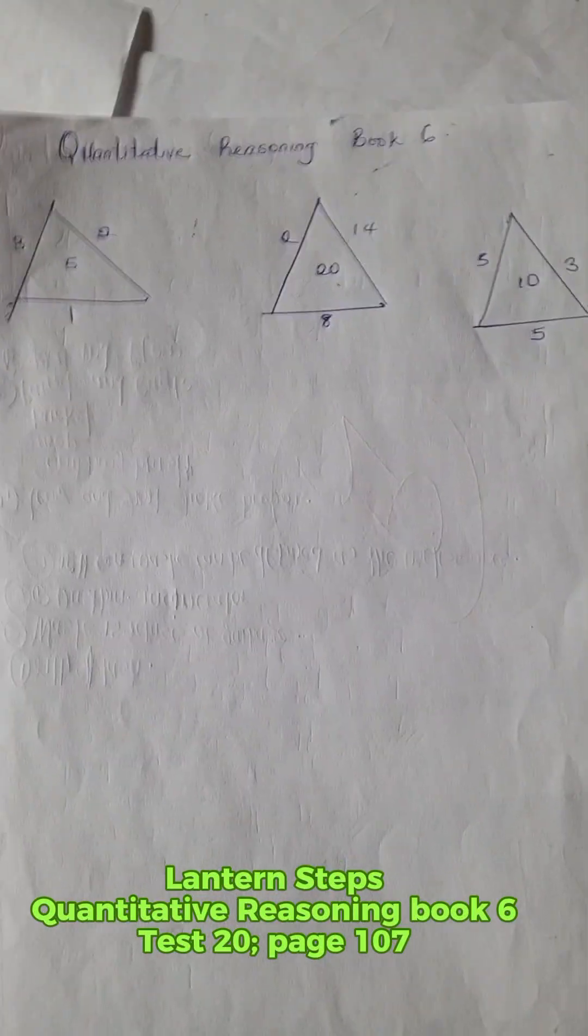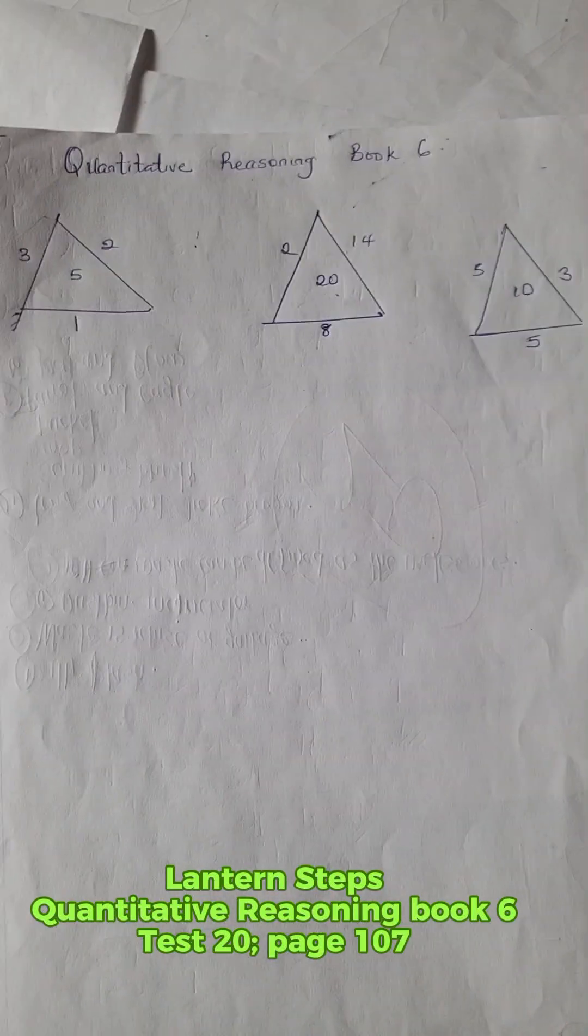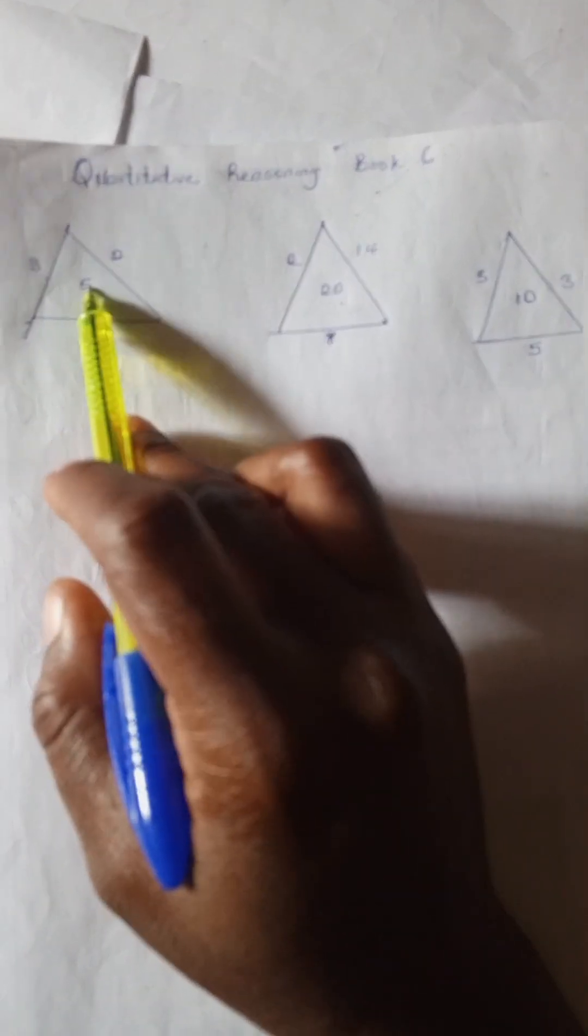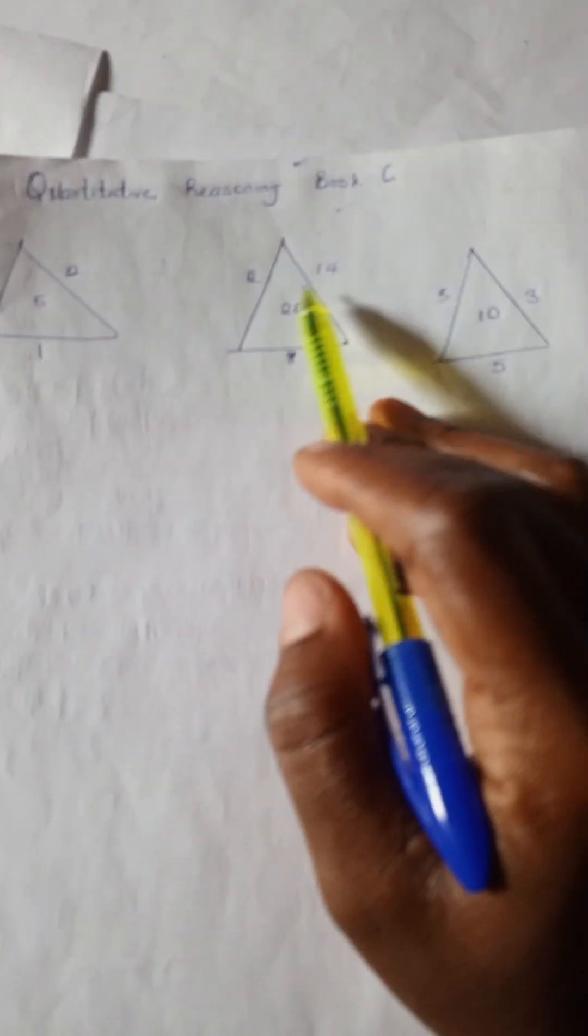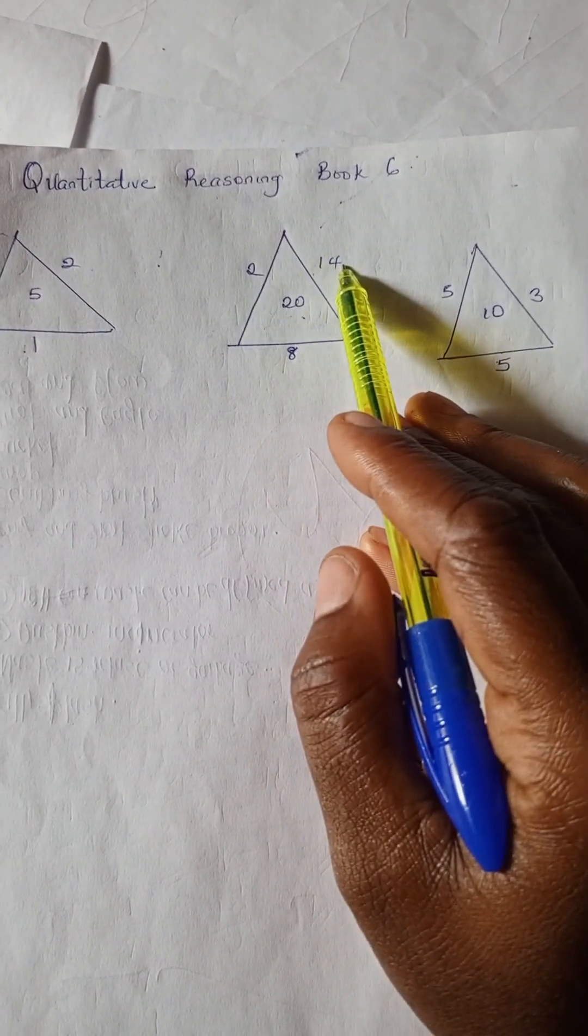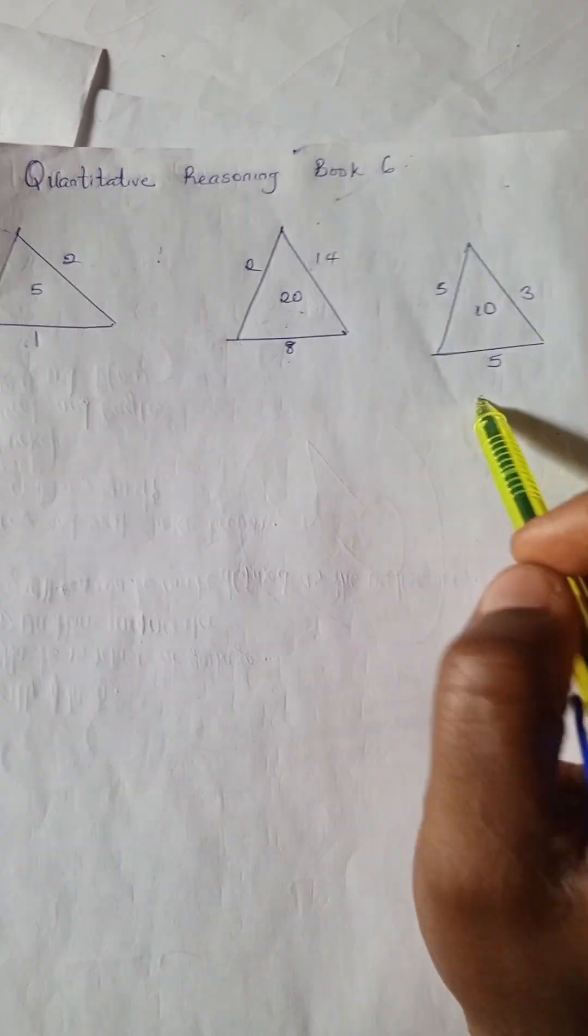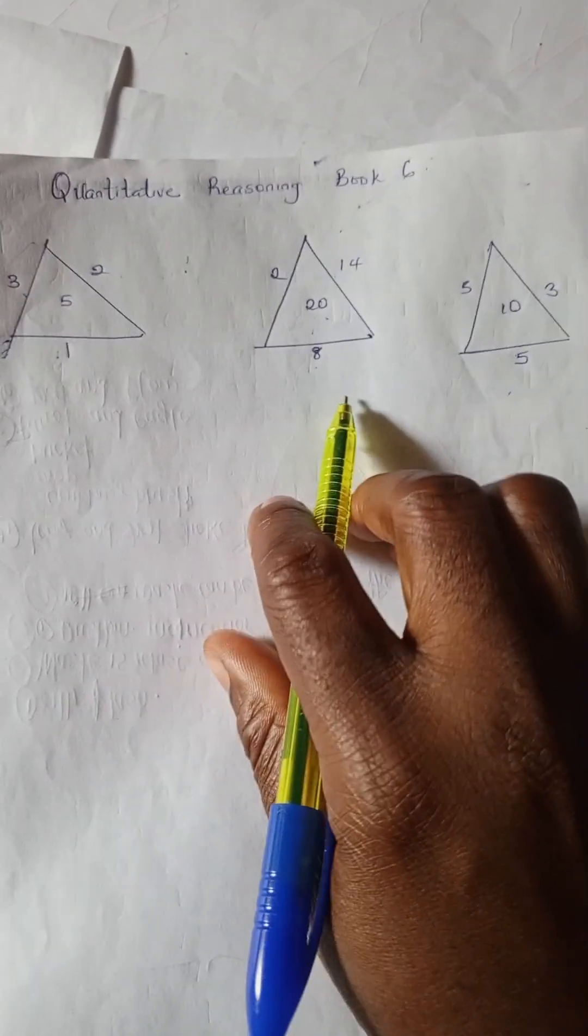Okay, let's look at this quantitative reasoning solution for grade 6. Here we have three triangles: 3, 2, 5, 1; then 2, 14, 28; and 5, 3, 10, 5.